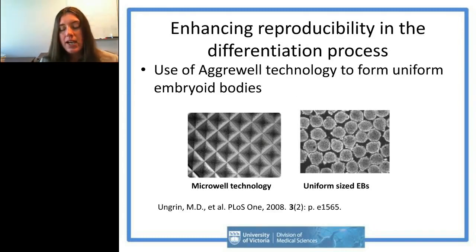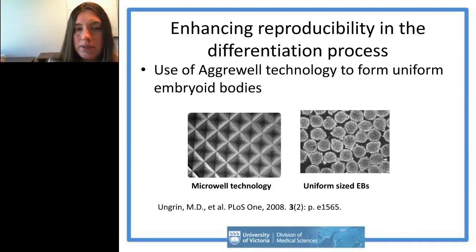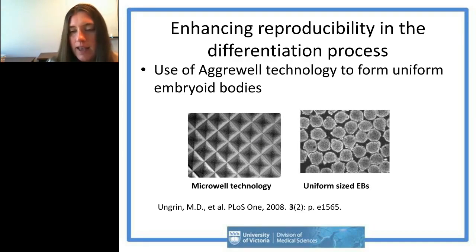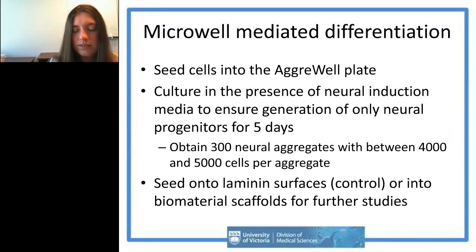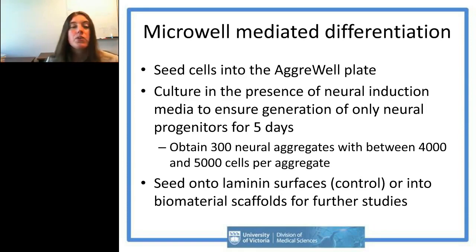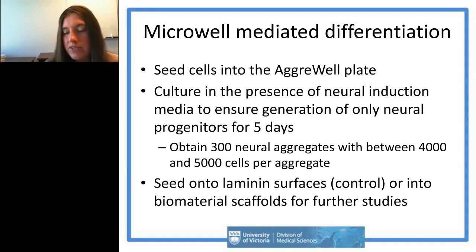Now I'll talk about how we switch and differentiate our cells into neural progenitors and keep this process uniform. We use the AggreWell technology from STEMCELL Technologies, which uses non-adhesive micro-wells to form uniform embryoid bodies, giving you aggregates all the same size with approximately the same cell number. For neural differentiation, we use STEMCELL Technologies' proprietary neural induction media. You end up with 300 neural aggregates containing between 4,000 and 5,000 cells per aggregate.